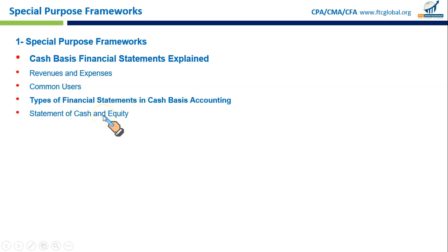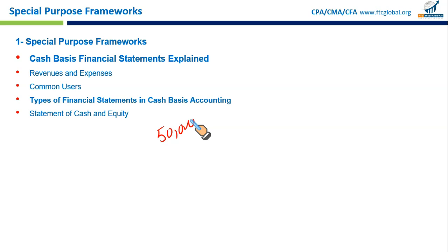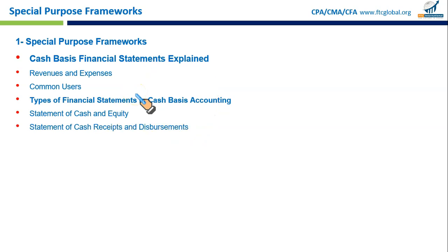Types of financial statements in cash basis accounting: First, the Statement of Cash and Equity. In pure cash basis, cash is the only asset recorded and no liabilities, debt, or obligations are included. As a result, equity equals cash. For example, a business with $50,000 in cash and no other recorded assets or liabilities would have equity of $50,000.